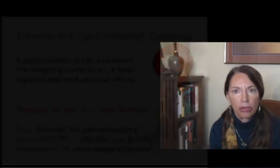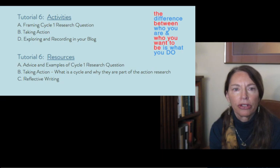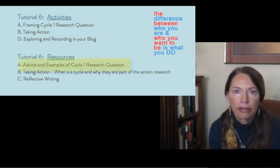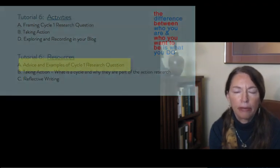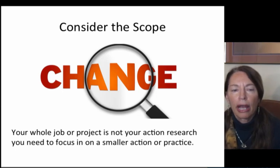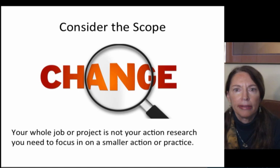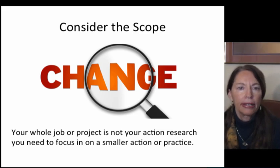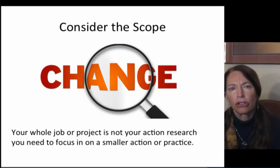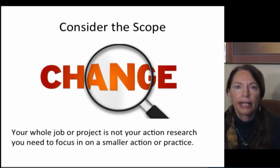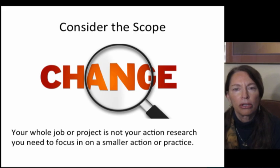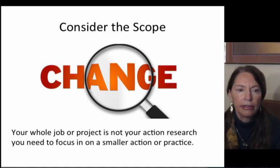In framing the cycle one research question there are a number of things that novice researchers often have trouble with. The first and pretty common one is the issue of scope — how big or how small should my first action be? You can't make your whole work or whole project your action research. You have to pick a strategy or an action, a smaller part of your work, because you can't study everything that you do. You're looking at something and trying to find the consequences of that action, so it's a good idea to start with something smaller in scope.